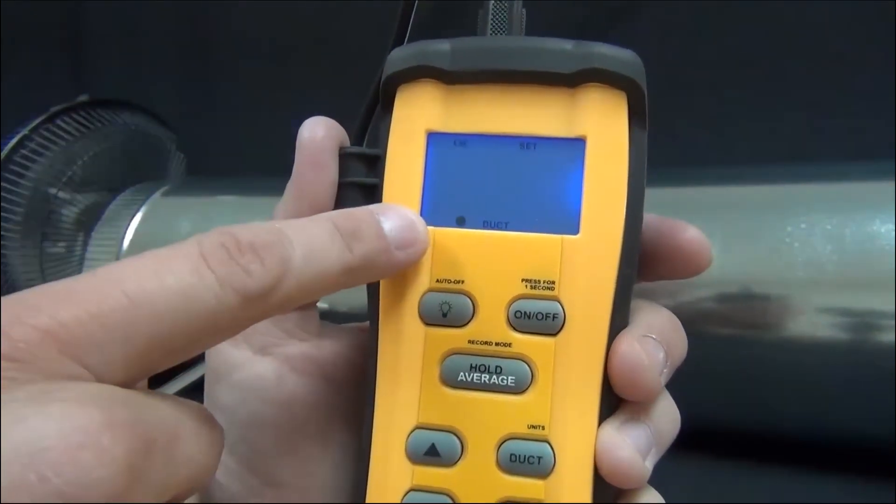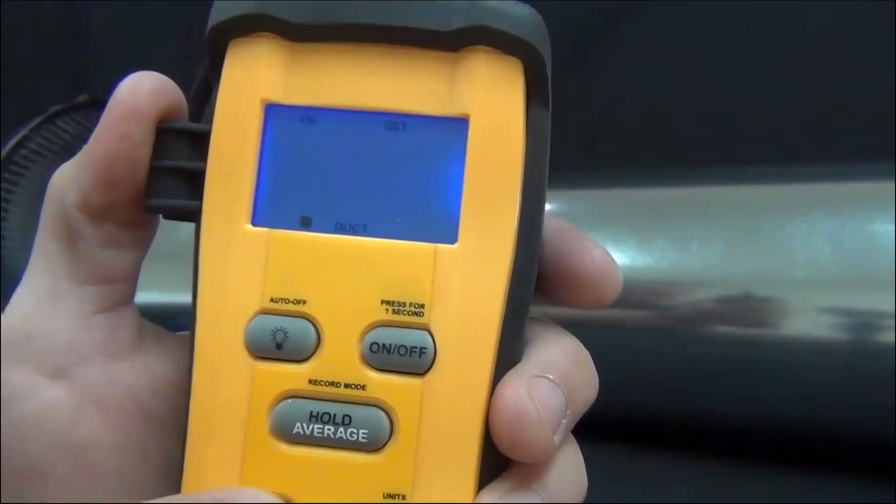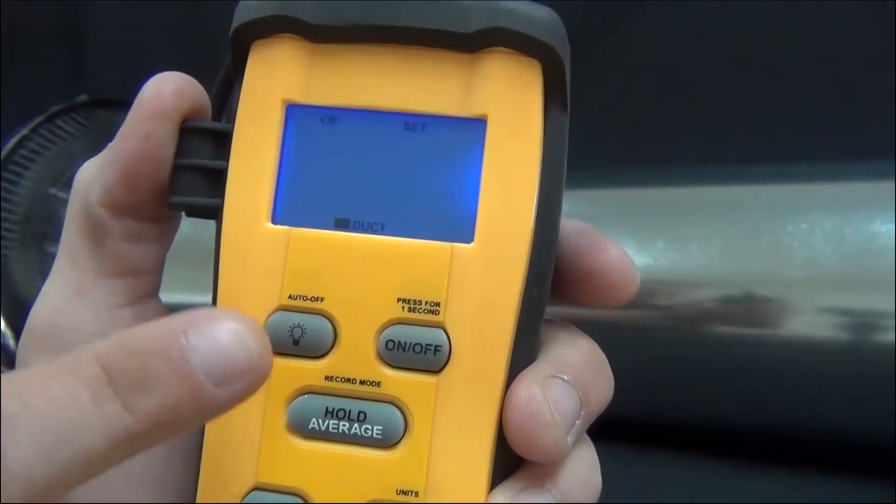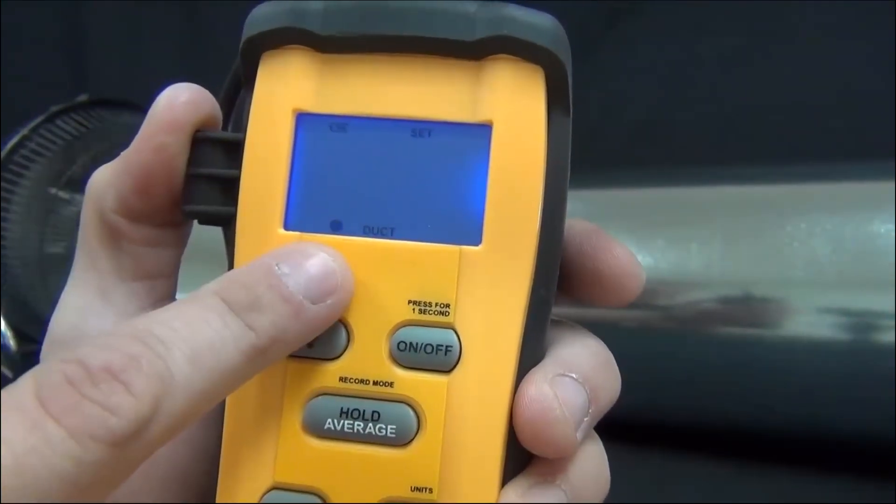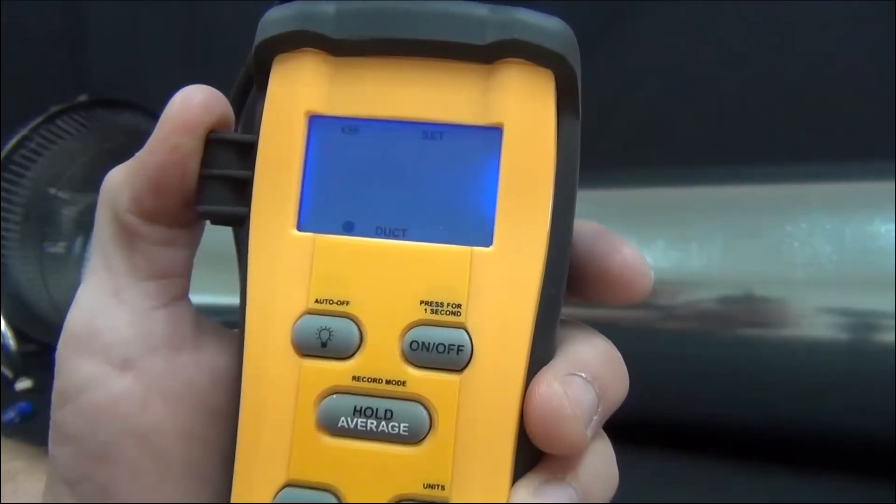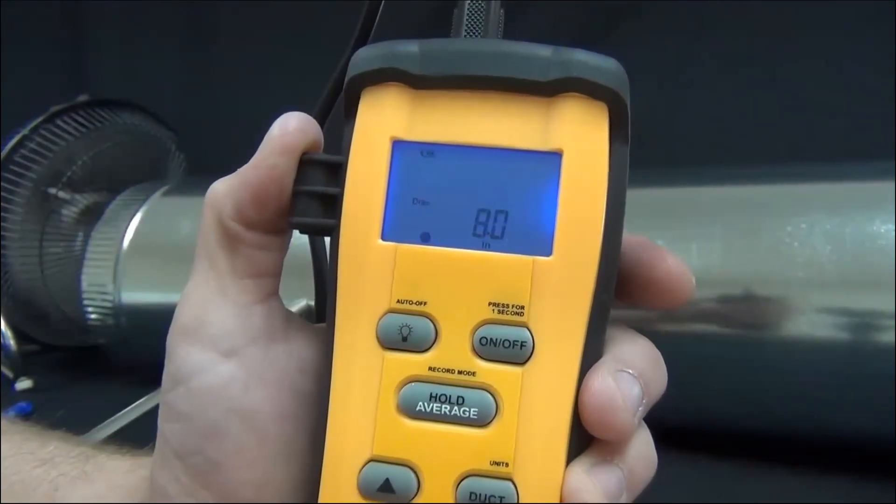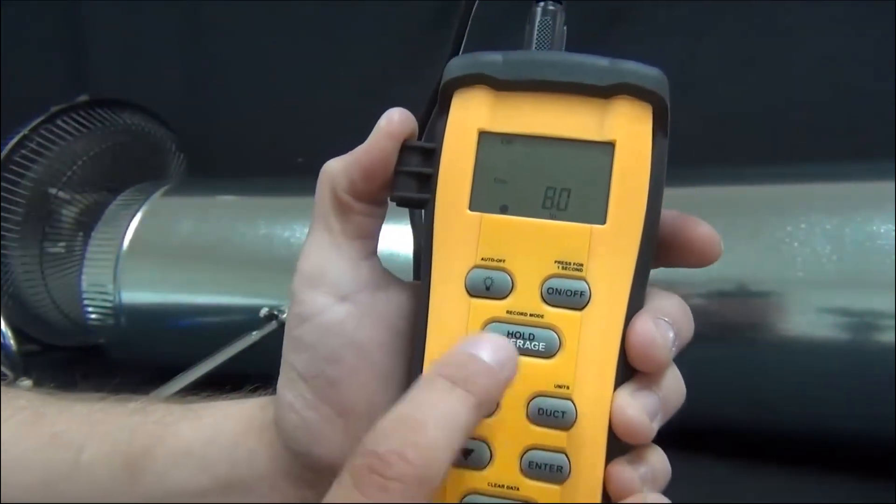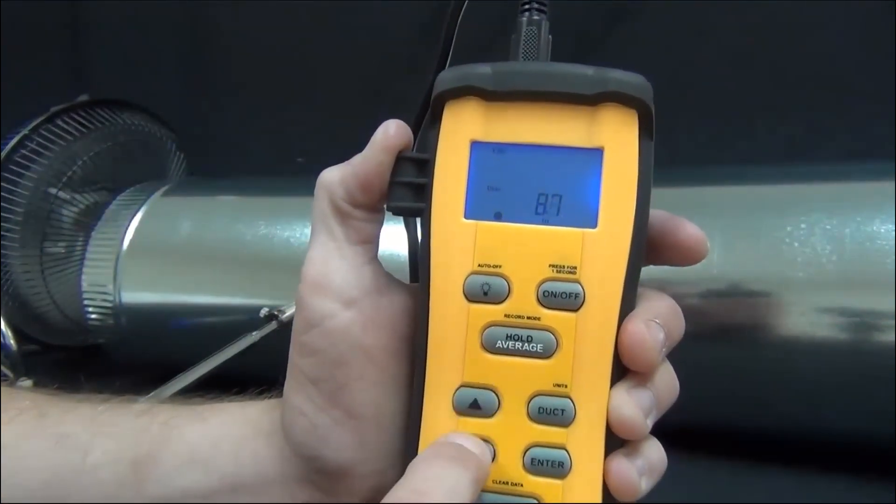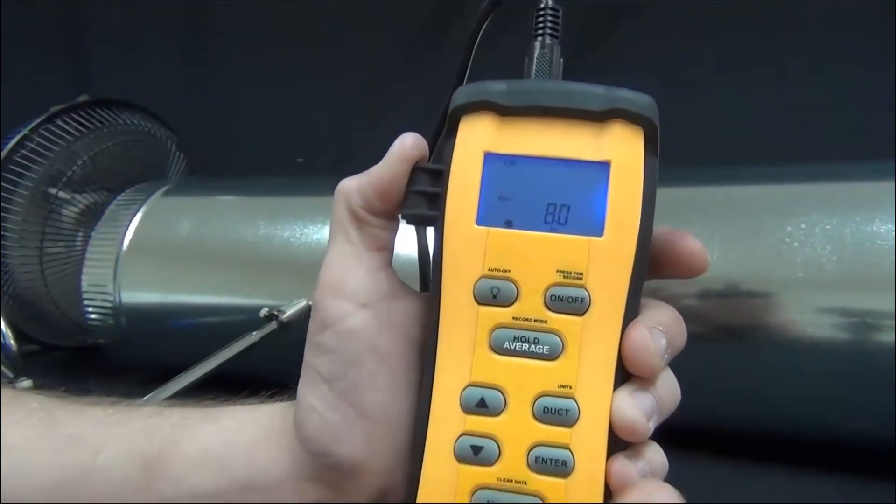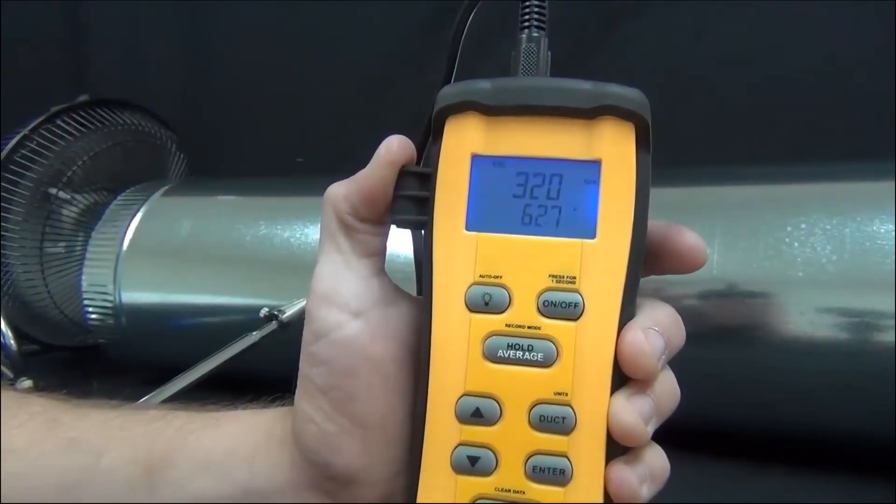Then it's going to ask me if I have a circular duct or a rectangular duct. And so this would be for the height and width, and the circular duct would be for the diameter. So I'm going to press enter for circular duct. And then I already put in the eight inches right there. To change it, all you'd have to do is press the up arrow to the desired diameter. So I'm going to put in eight diameter and press enter to lock it in.